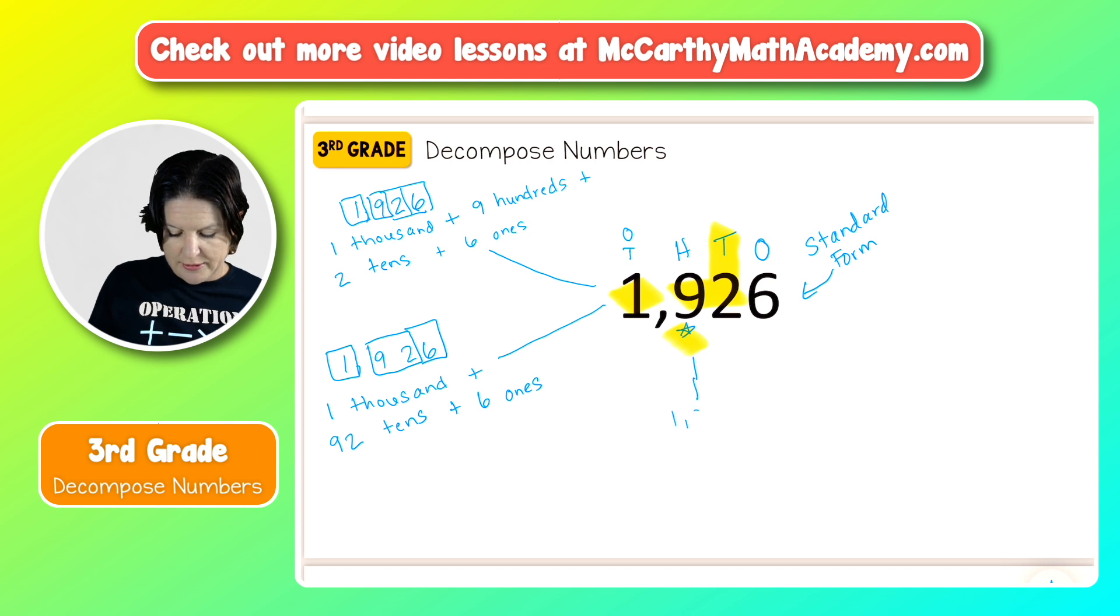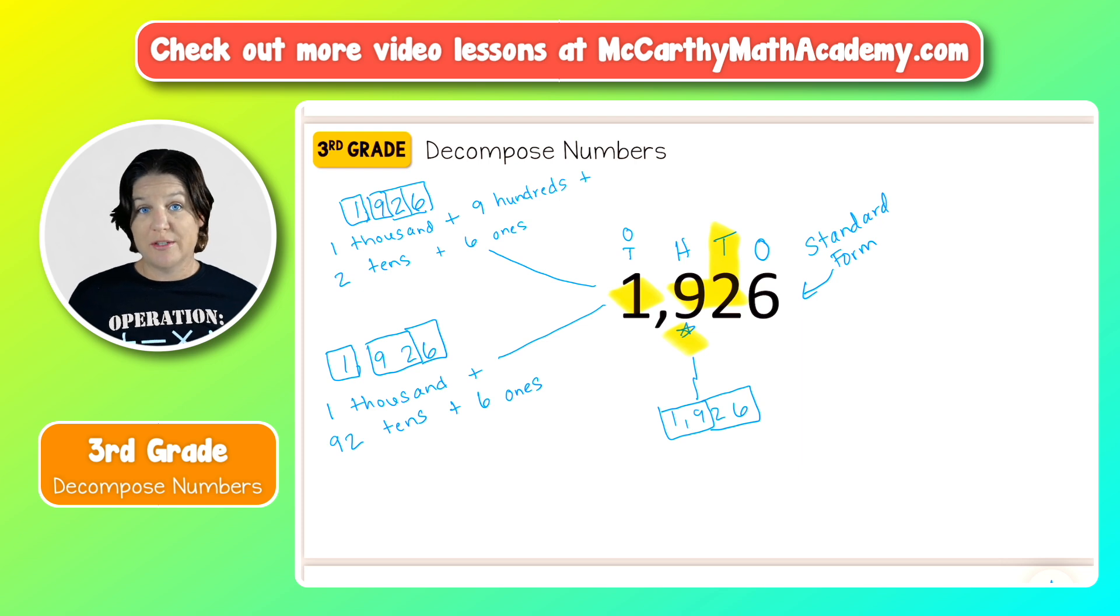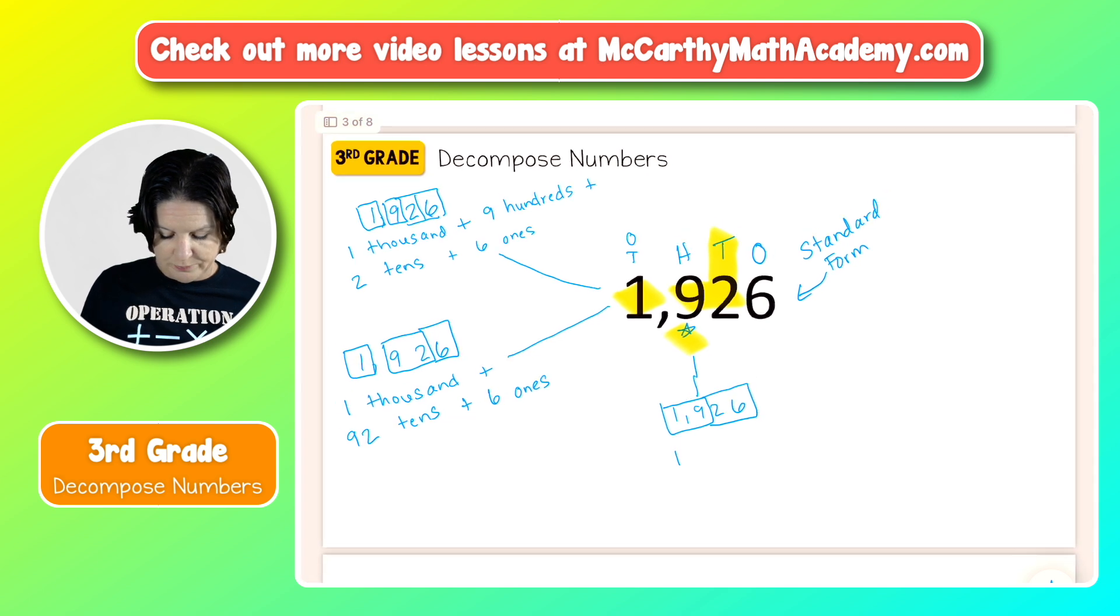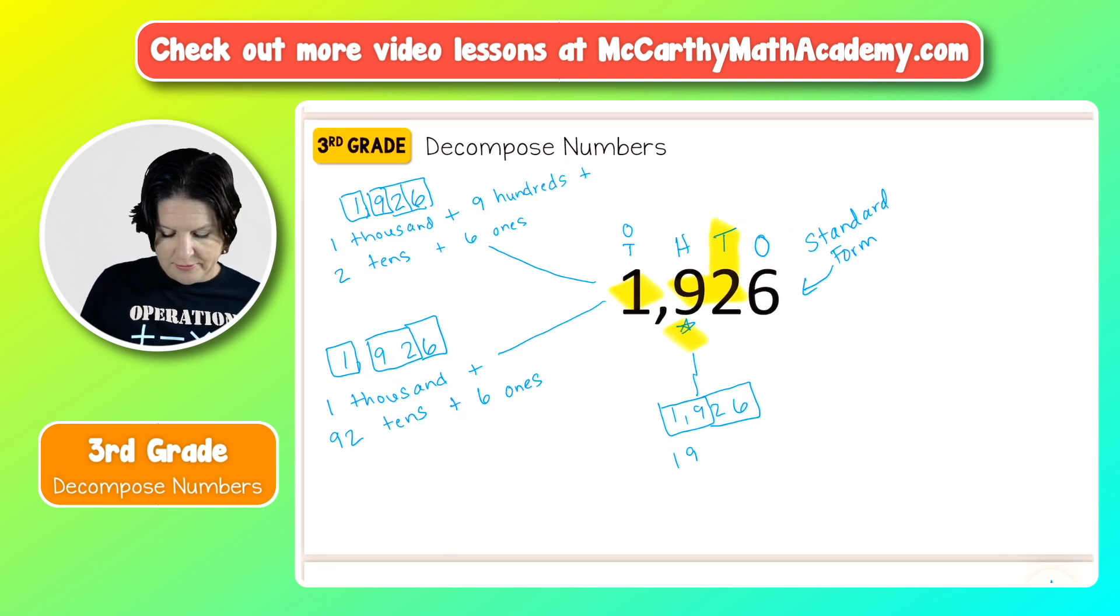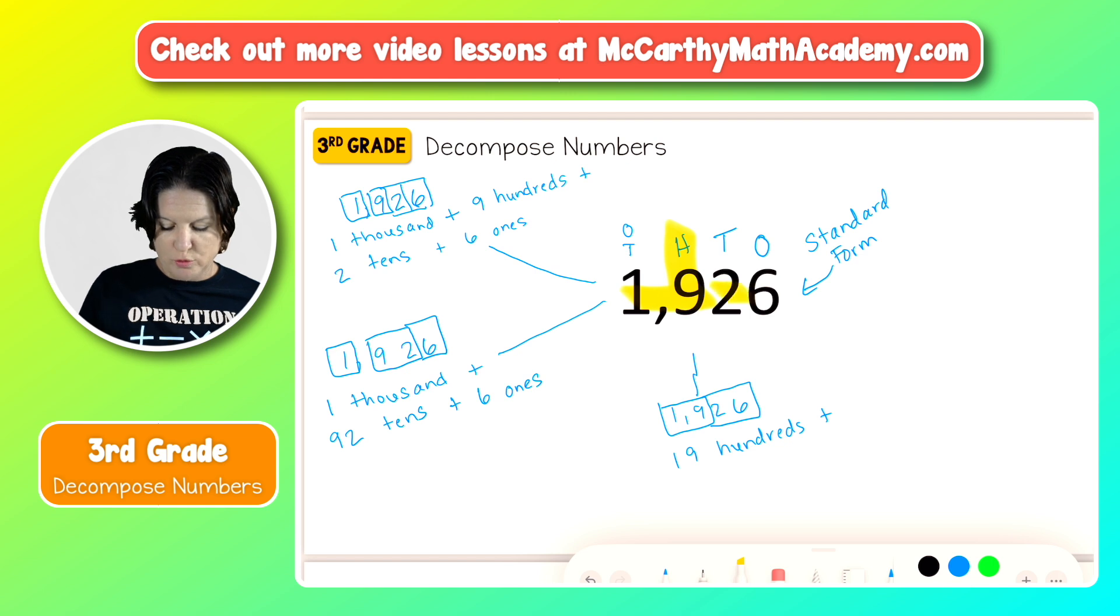Let's try another way. This time I'm going to box the one and the nine together and the two and the six together. I'm really just doing this randomly to show you a variety of ways to decompose. We have 19 hundreds plus 26 ones. And that's another way to decompose this number.